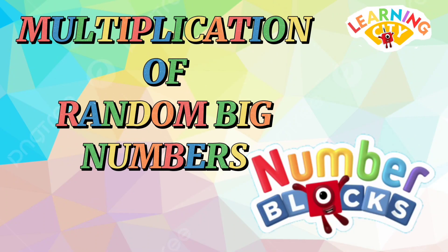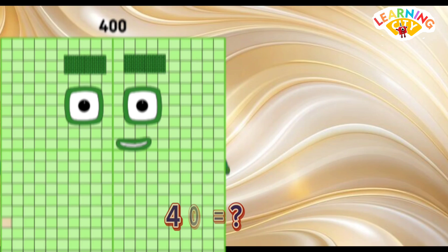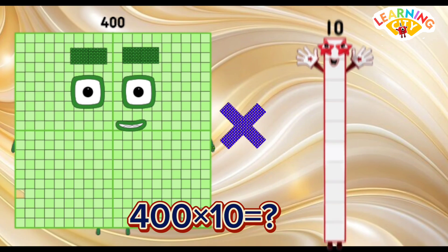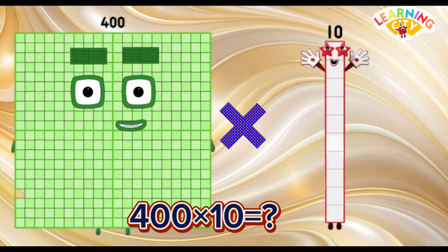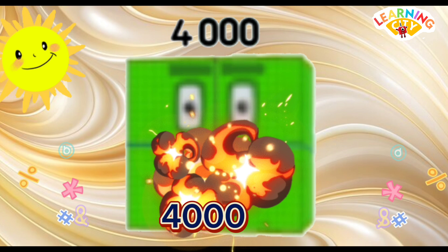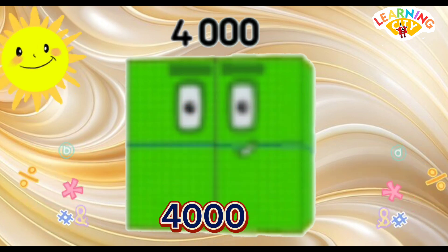Hello kids, let's learn multiplication of random big numbers with number blocks. 400 multiply 10 is equals to 4,000.